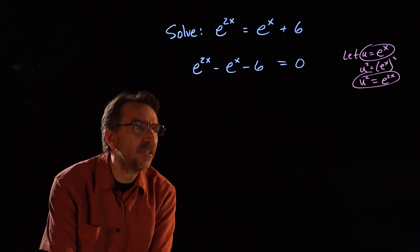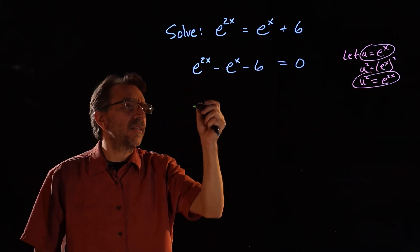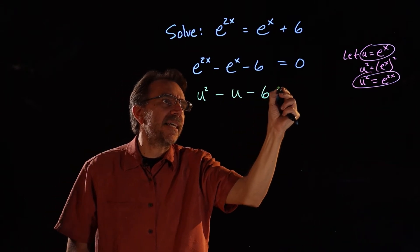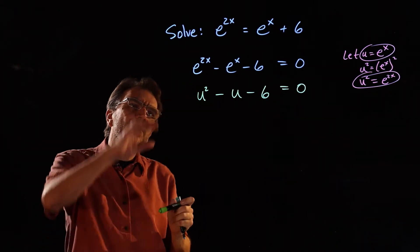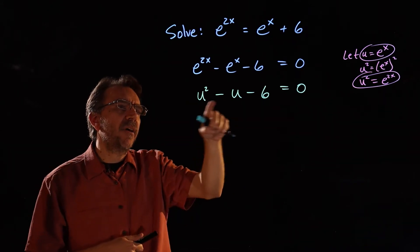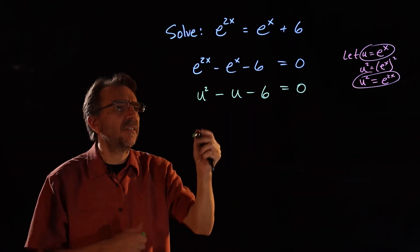Now if we make that substitution, this is u squared minus u minus 6. So these two equations here are sort of equivalent. And we know how to solve this little quadratic. Not a problem.